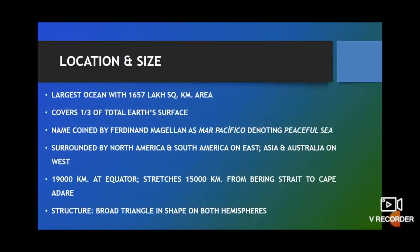The Pacific Ocean is the largest ocean of the world, covering an area of approximately 165.7 million square kilometers. Together with its associated seas, it covers about one-third of the total area of Earth's surface. It is also the oldest, the coldest, and the deepest ocean in the world. The name Pacific denotes 'pacified' or 'beautiful.' The name was coined by the Portuguese explorer Ferdinand Magellan in 1520 as he sailed through the calm patches of water on the ocean.